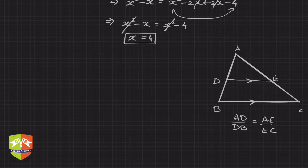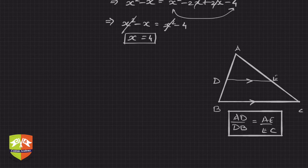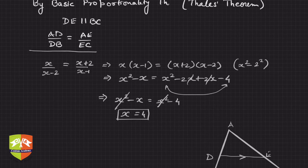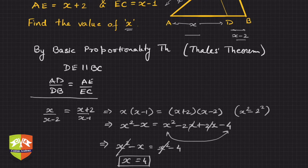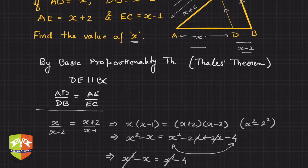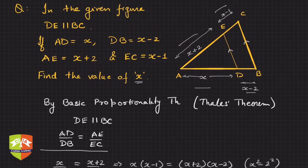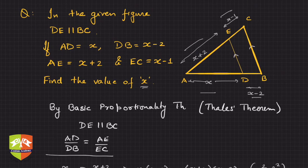This is what Basic Proportionality Theorem, or Thales Theorem, states — and we used the same result to find the solution in this given question. The idea is: you must know Thales Theorem and you must be able to apply it correctly in a given situation.